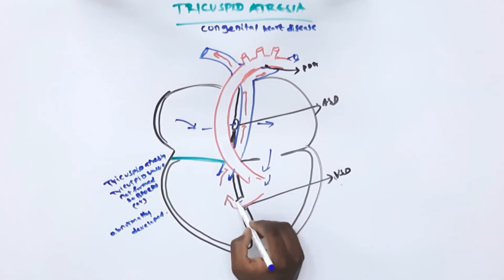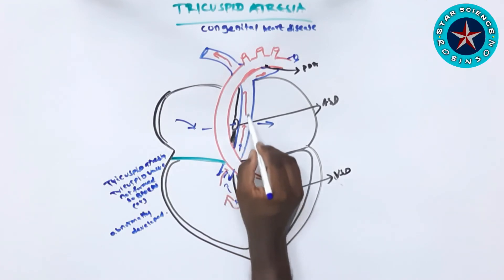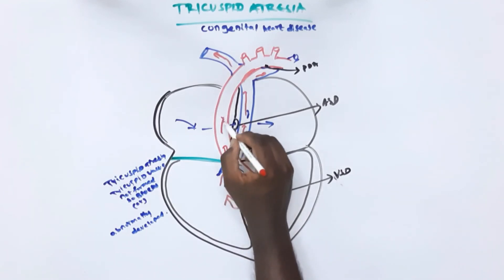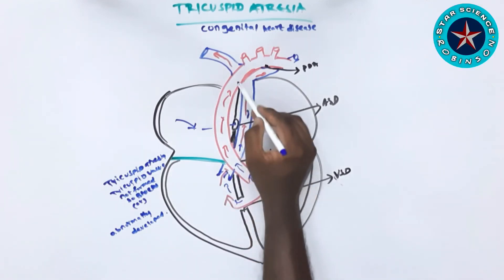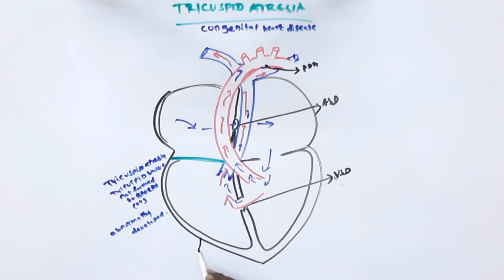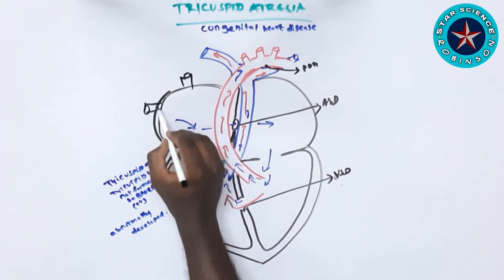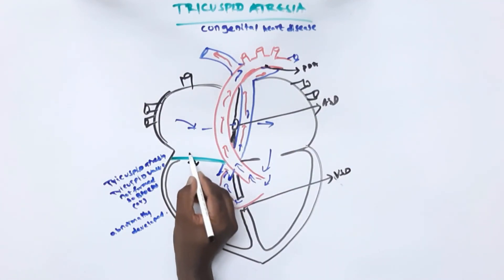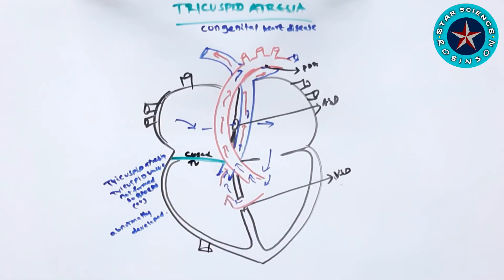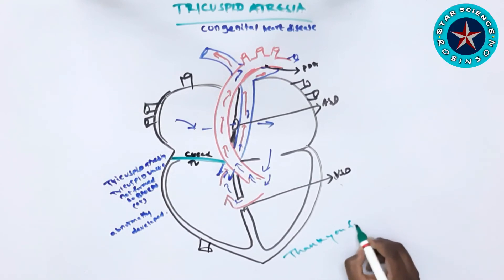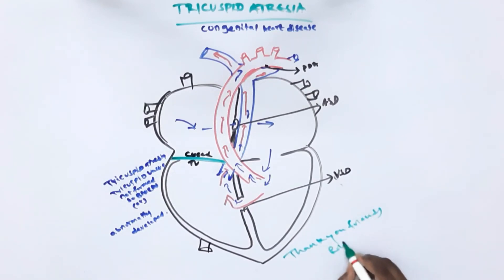To summarize the route: CO2 blood from the right atrium flows through the atrial septal defect to the left atrium, then to the left ventricle. From the left ventricle it passes through the ventricular septal defect to the right ventricle, and also from the left ventricle to the aorta. From the aorta, the patent ductus arteriosus joins to the pulmonary artery, allowing blood to flow to both the systemic circulation and the lungs. This is how blood circulation occurs in tricuspid atresia patients.